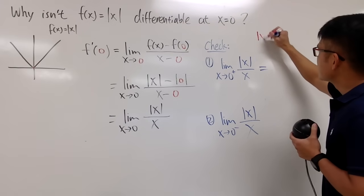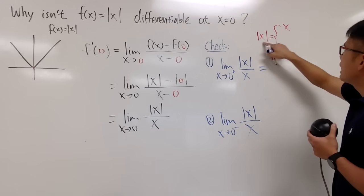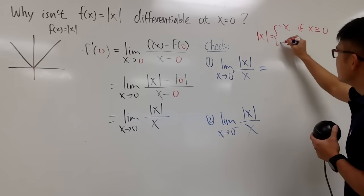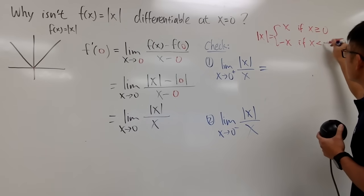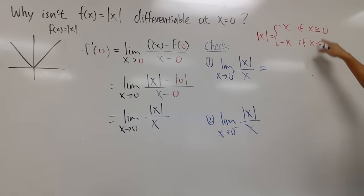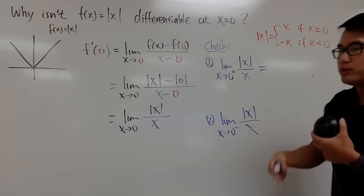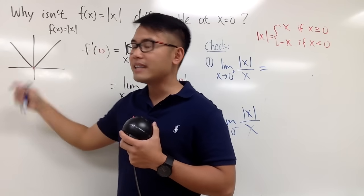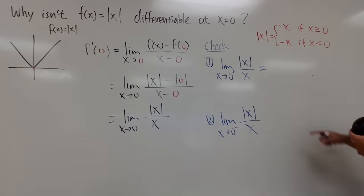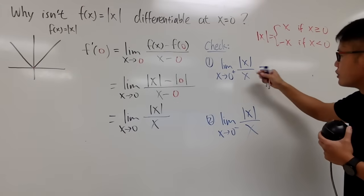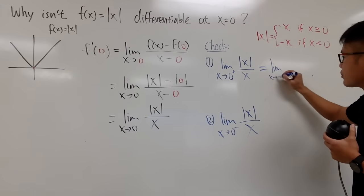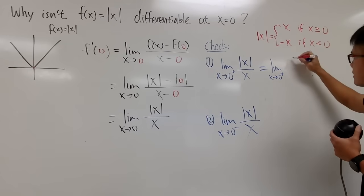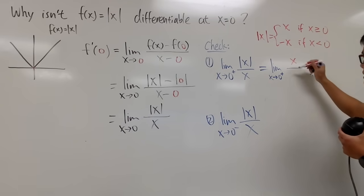Remember, absolute value of x is equal to positive x if x is greater than or equal to 0, and negative x if x is less than 0. From the positive side, this expression simplifies to the limit as x approaches 0 plus of x over x, since we replace absolute value of x with just x.